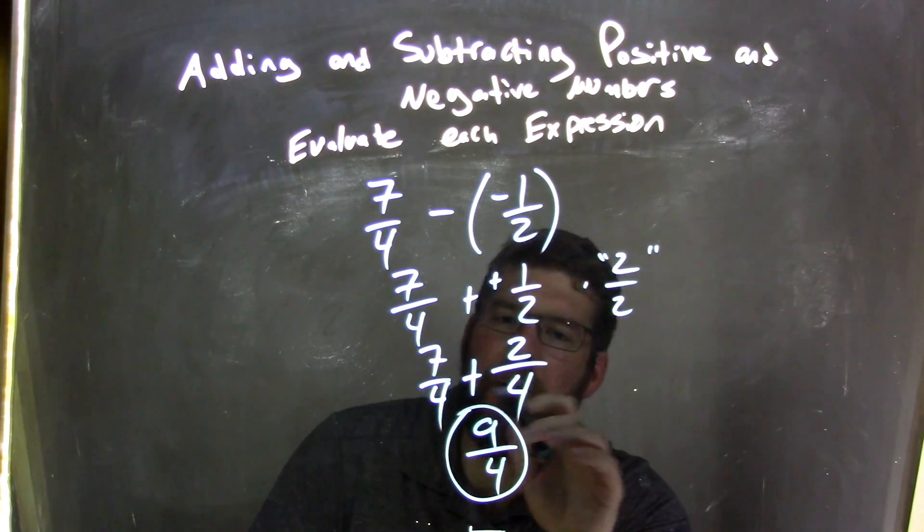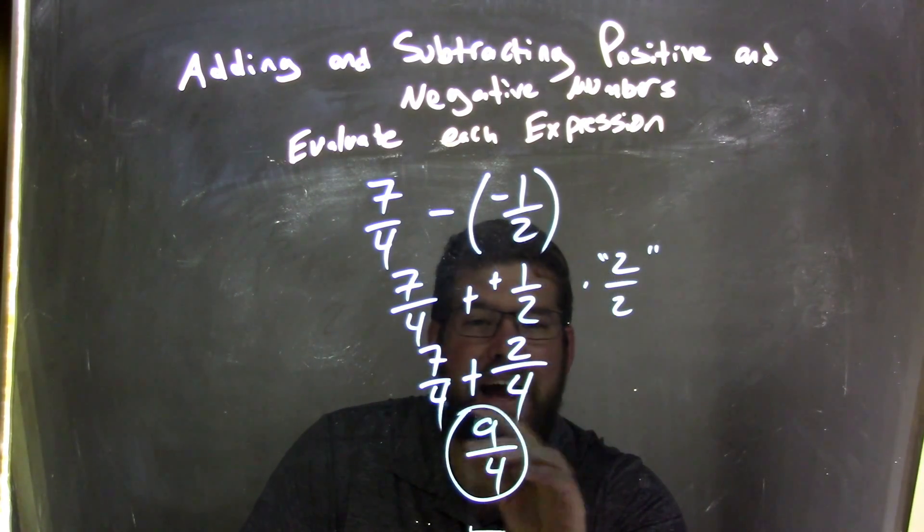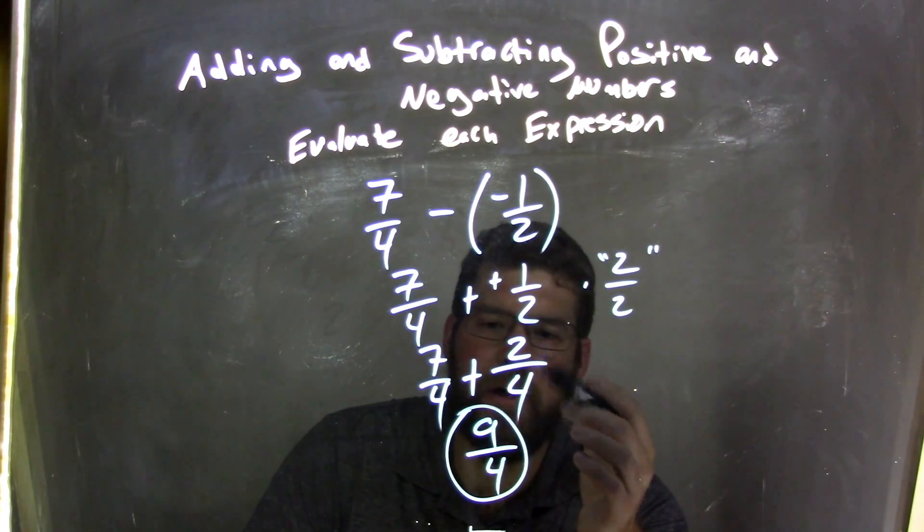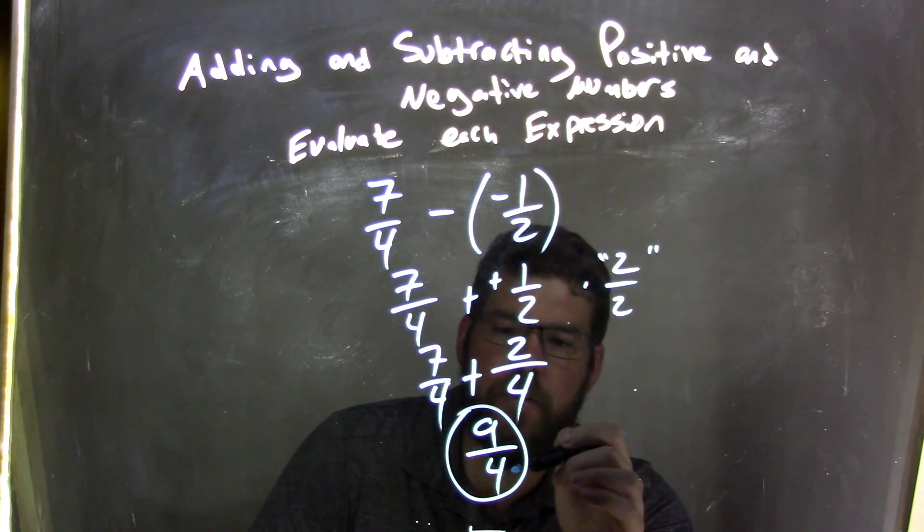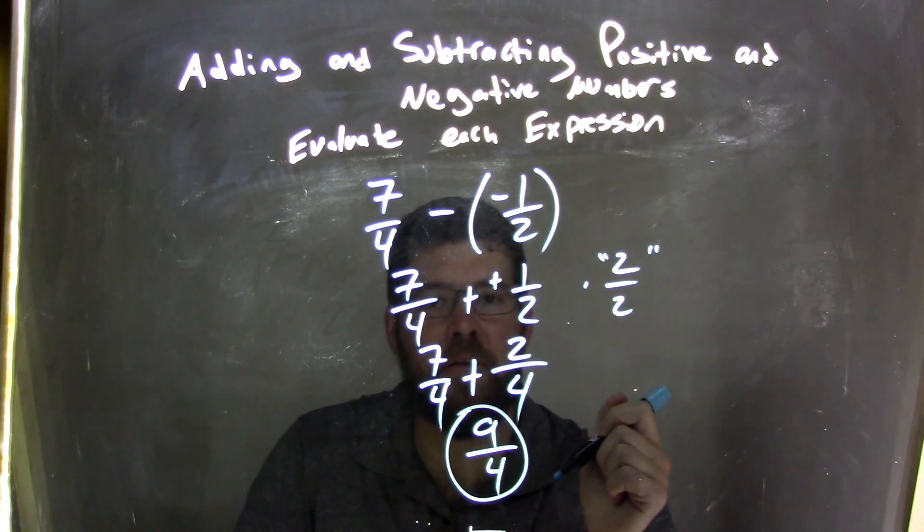Now we have these two fractions we're adding together. They have the same base, so we just add the numerator. 7 plus 2 is 9, kept the denominator the same. And numerator was 9, denominator is 4, and 9 fourths is our final answer.